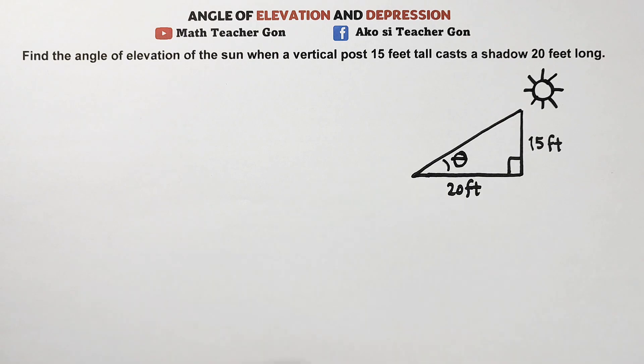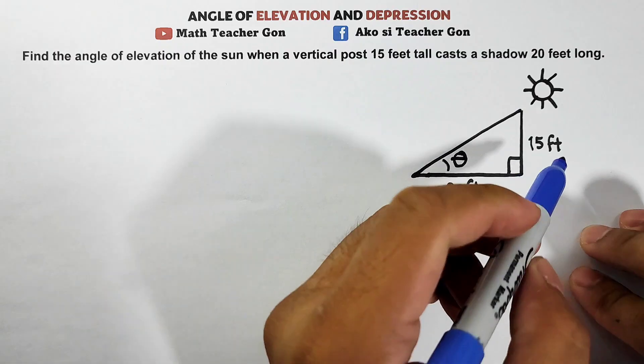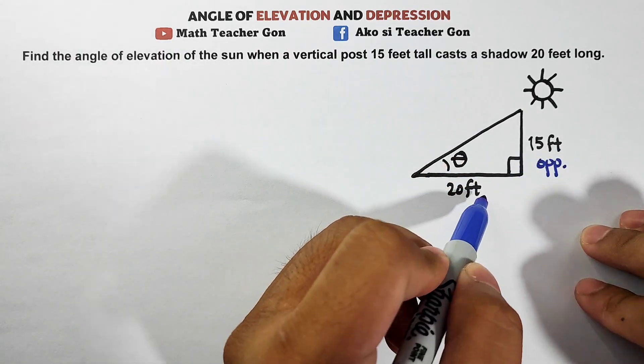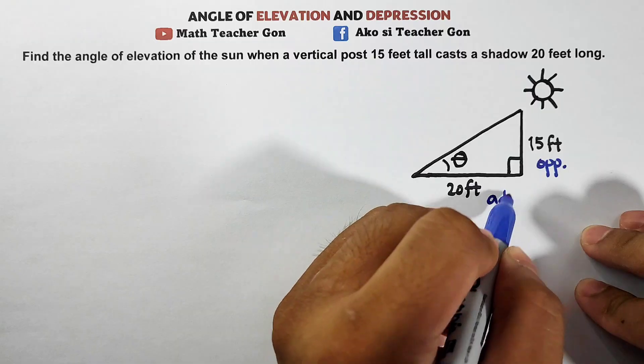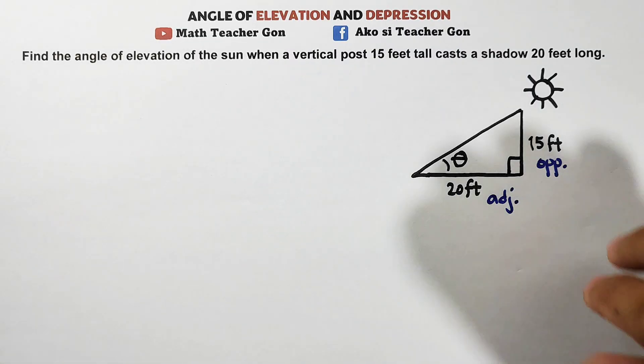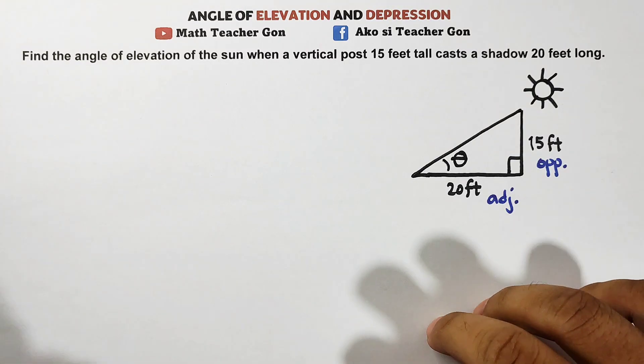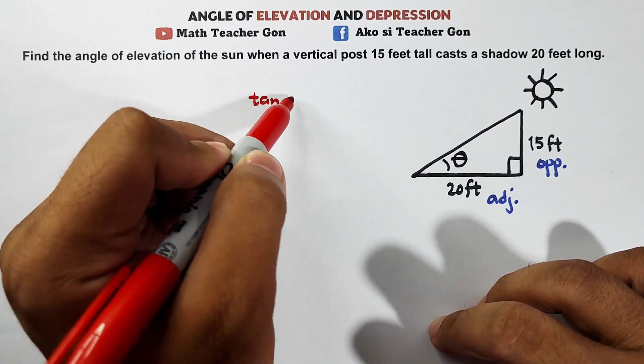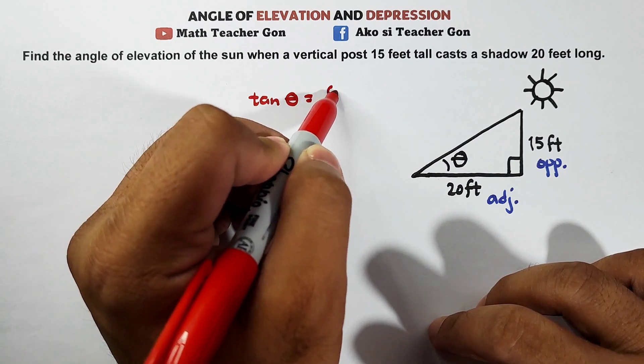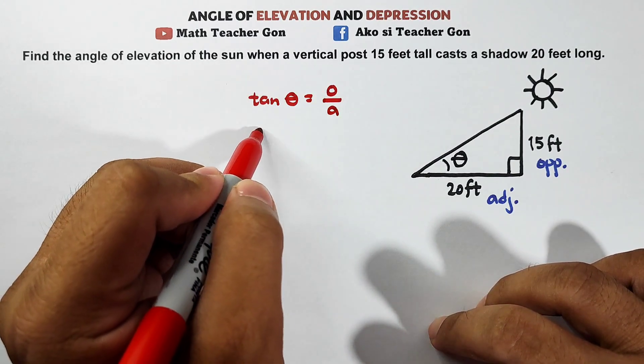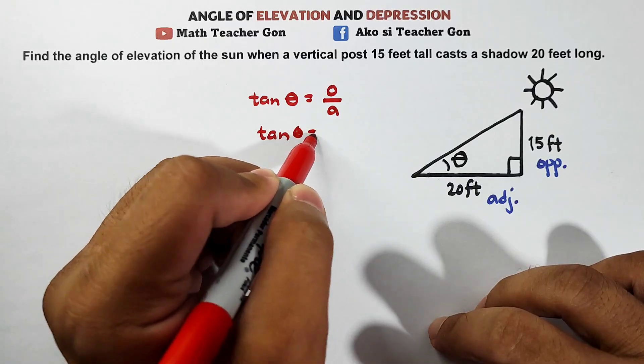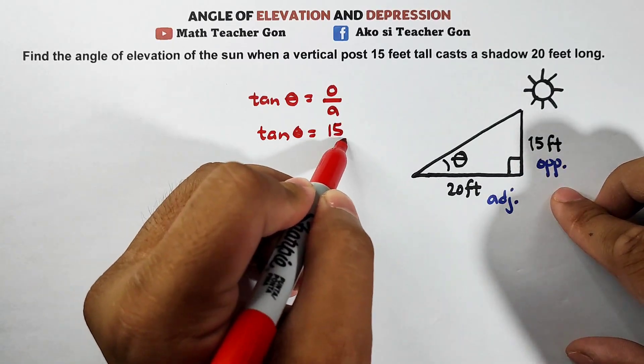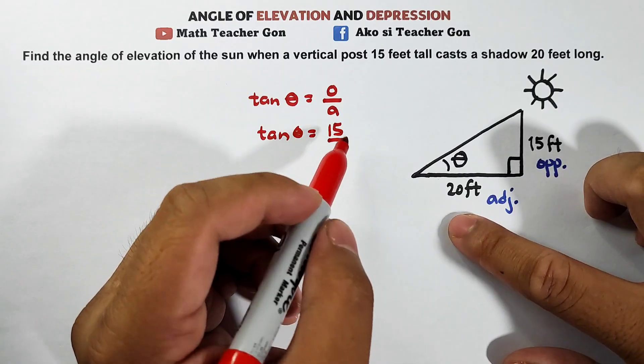Now with respect to your angle theta that we're looking for, what sides are available to us? 15 feet is your opposite side and this one is your adjacent side. Now same with the first example, we will use tangent because that's opposite over adjacent. So we will use tangent. We have tangent theta equals opposite over the adjacent. So we have tangent theta equals your opposite which is 15 over your 20 feet.